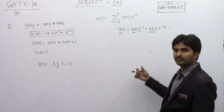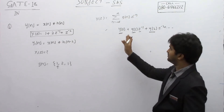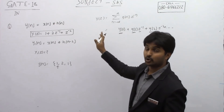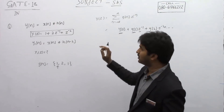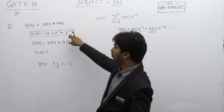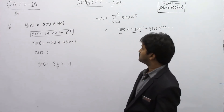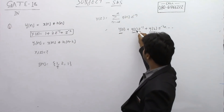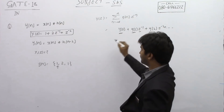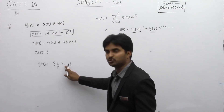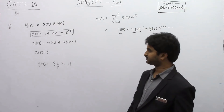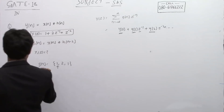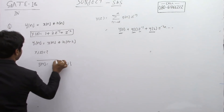The remaining values — y(3), y(4), y(5), and similarly y(-1), y(-2) — are going to be equal to zero, because there are no corresponding coefficients. Therefore, we have only y(0), y(1), and y(2), which gives us {1, 2, 1}. This is the output y(n).